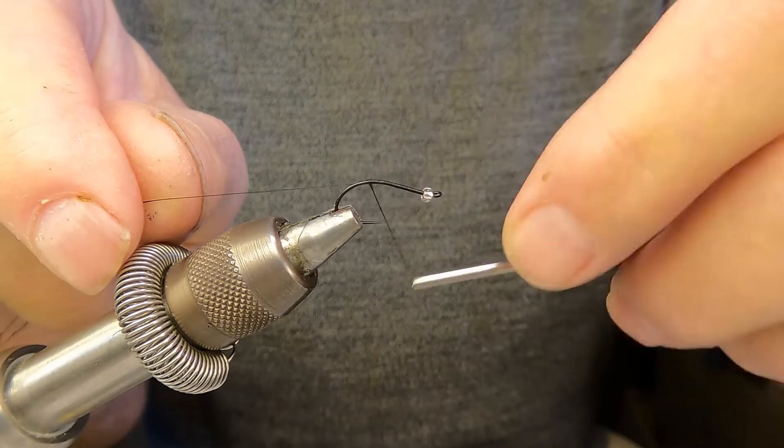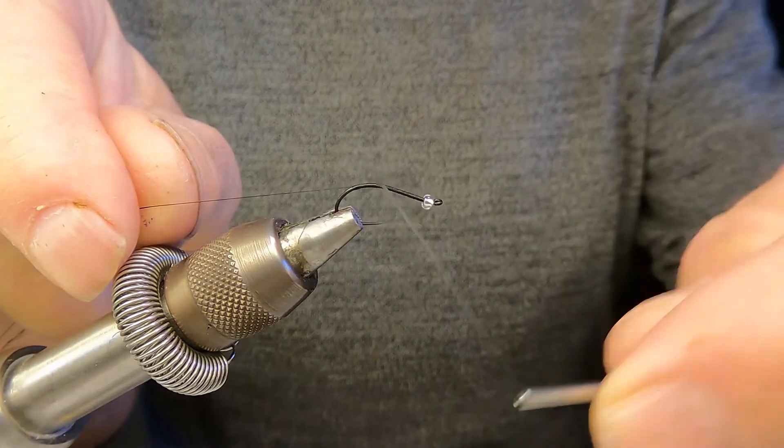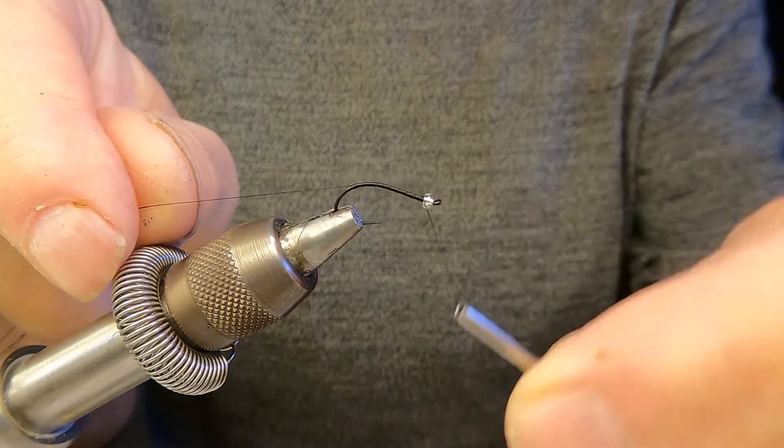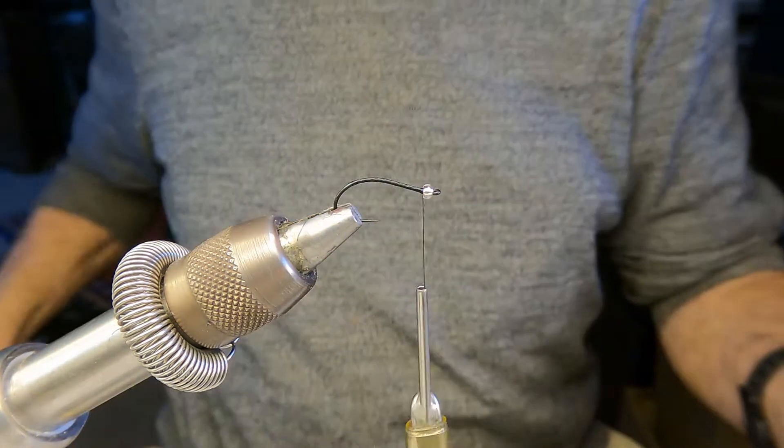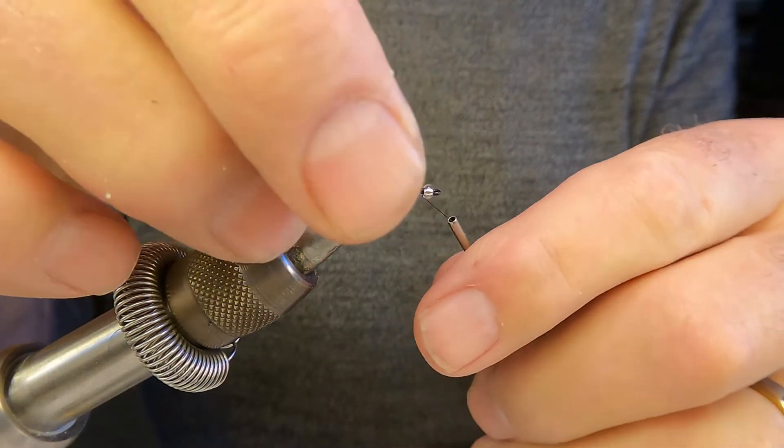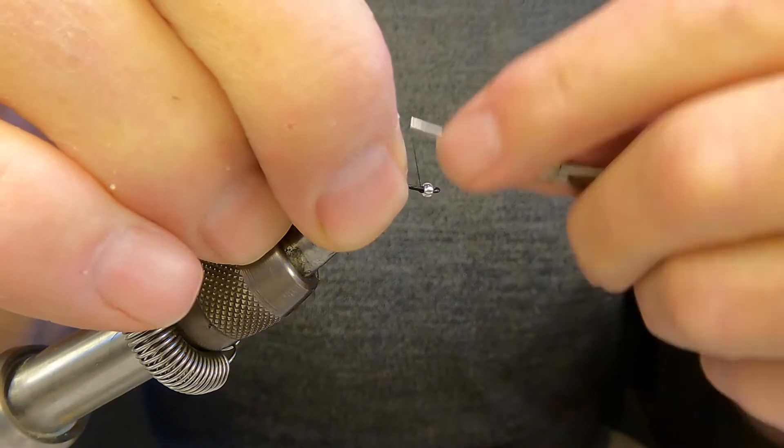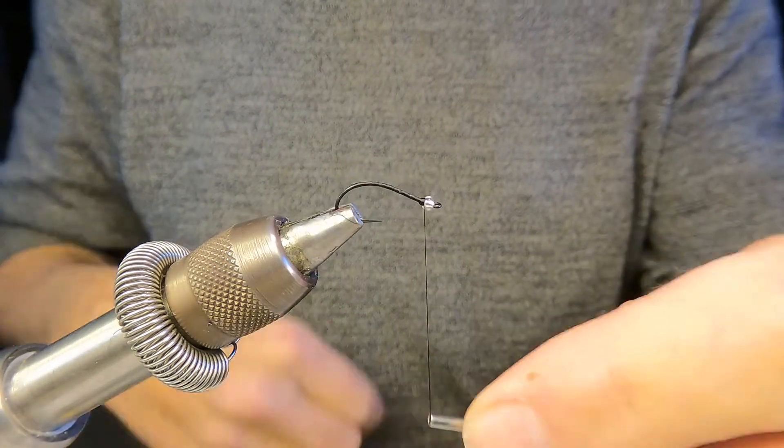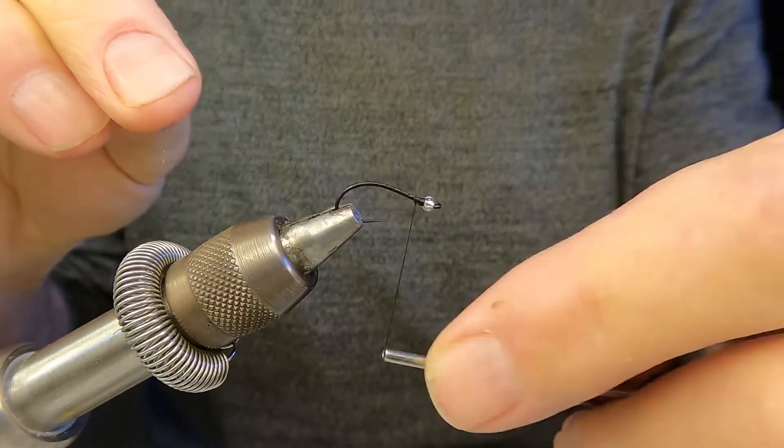We also build up a cone of thread at the bead so it holds in place when we slip the foam applicator head over this. This is a reverse tied fly—the posterior is going to be back here at the hook eye and the head is going to be out over the bend.